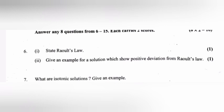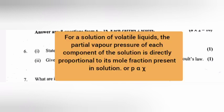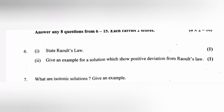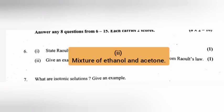Question 6(i): State Raoult's Law. Answer: For a solution of volatile liquid, the partial vapor pressure of each component of the solution is directly proportional to its mole fraction present in solution. (ii) Give an example for a solution which shows positive deviation from Raoult's Law. Answer: Mixture of ethanol and acetone.